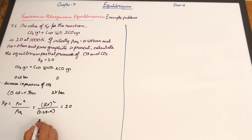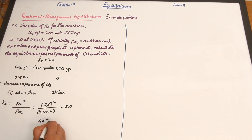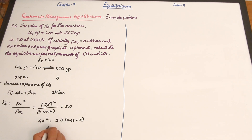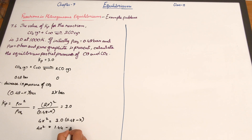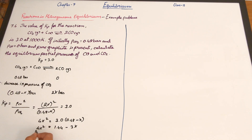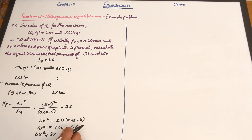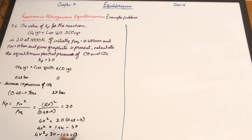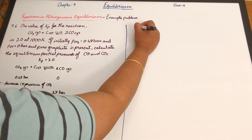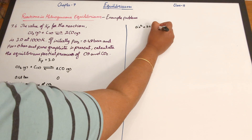Simplifying, we get 4X² equals 3.0 times (0.48 minus X). Multiplying out gives 4X² equals 1.44 minus 3X. Rearranging into a quadratic equation gives 4X² plus 3X minus 1.44 equals 0, where for the quadratic AX² plus BX plus C equals 0, A equals 4, B equals 3, and C equals minus 1.44.